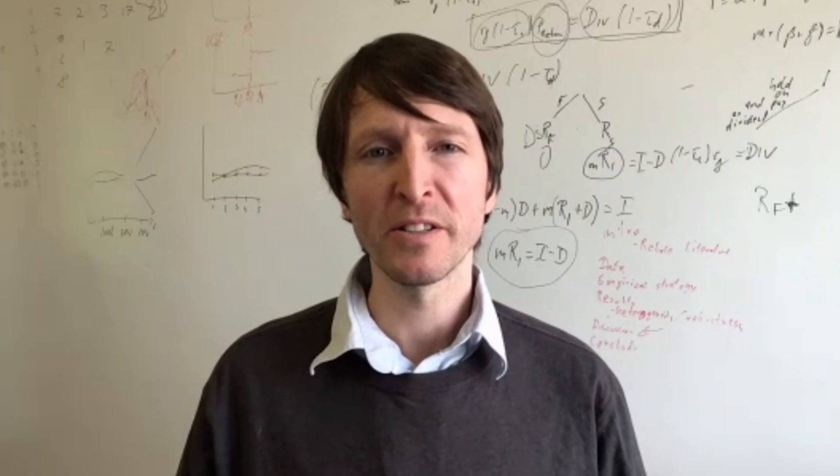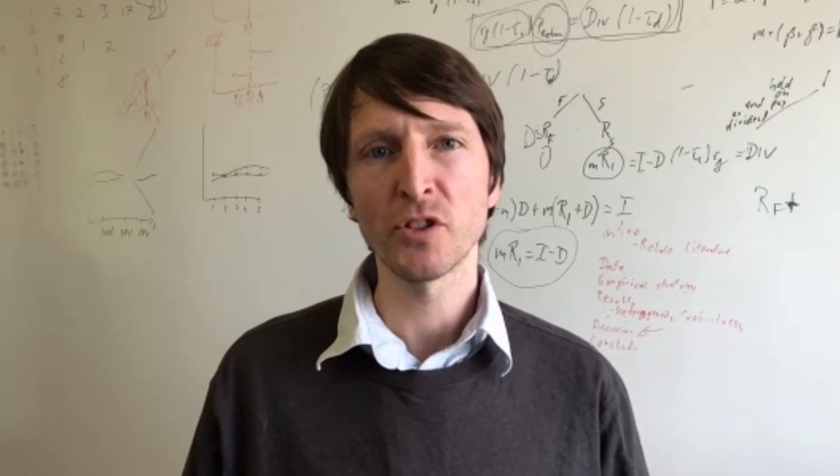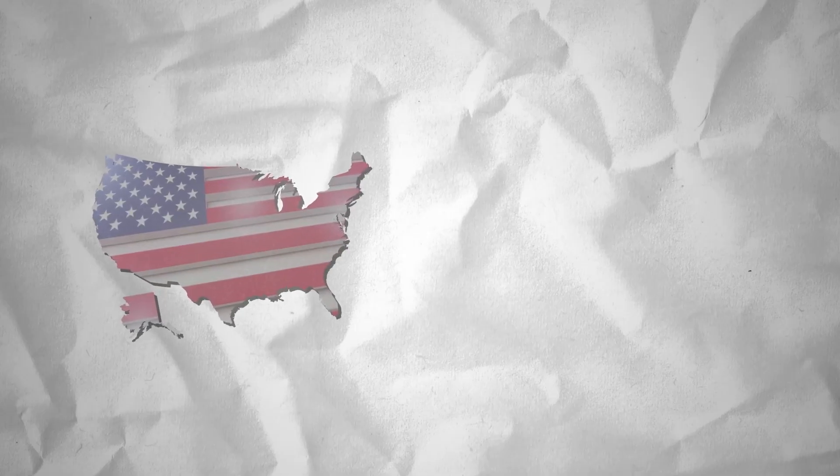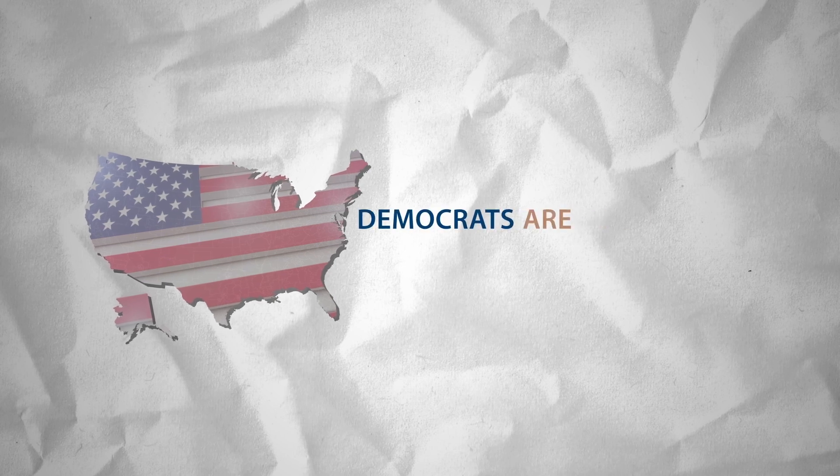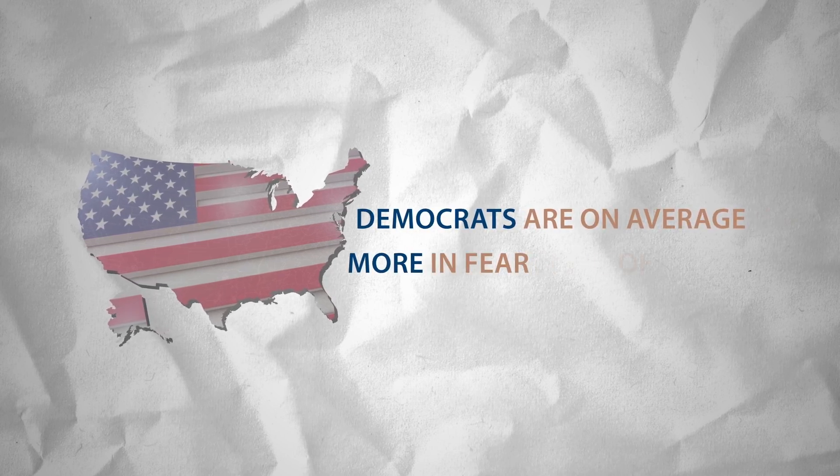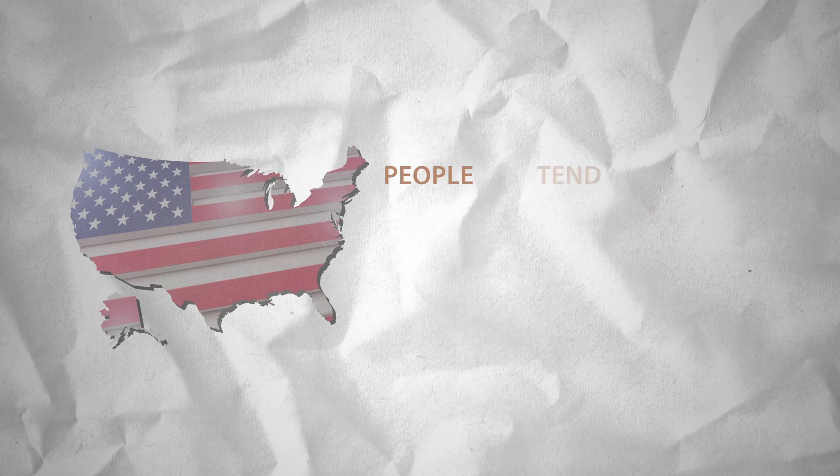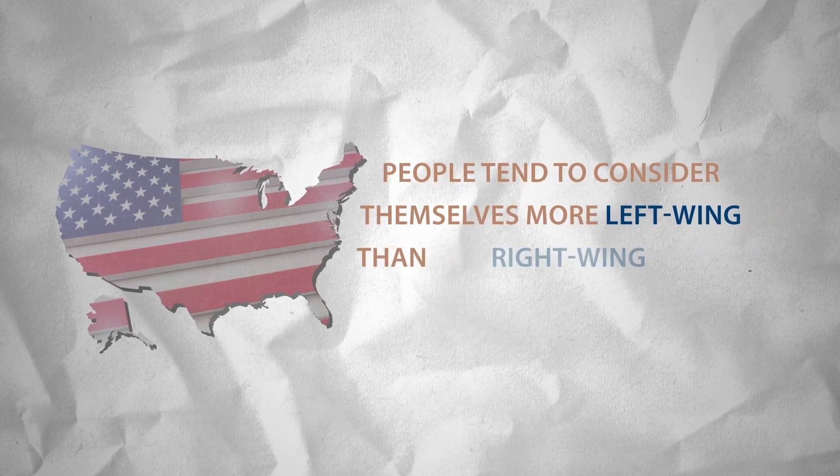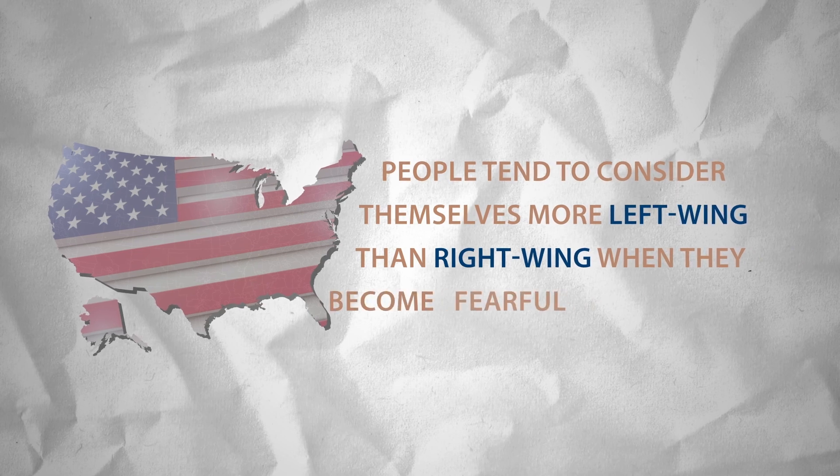When looking at the respondents, we see that people who have a stronger fear of automation tend to vote differently. In our study, we were looking at the US population and there we found that Democrats are on average more in fear of automation. People tend to consider themselves more left-wing rather than right-wing when they become more in fear of automation.